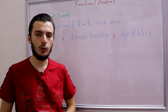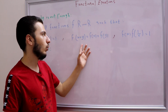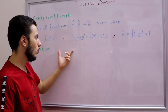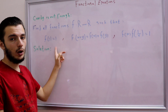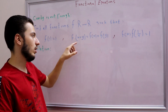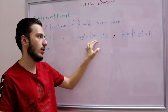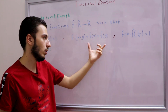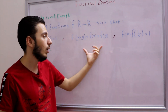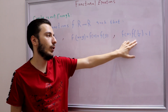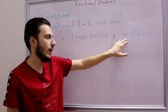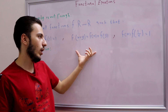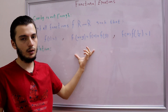Let's take a look at our functional equation. We're asked to find all functions f from ℝ to ℝ satisfying three conditions: f(1) = 1; f(x + y) = f(x) + f(y), which is the additive Cauchy functional equation; and f(x) · f(1/x) = 1.